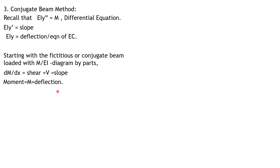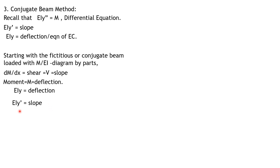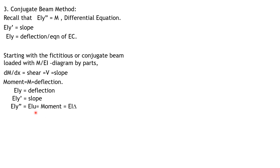Remember: moment M corresponds to deflection. The reason is that if we begin with EI y-double-prime and replace it with u — where EI y equals deflection, EI y-prime equals slope, and EI y-double-prime equals moment — then replacing y-double-prime by u, which represents global displacement, we have u equal to moment.